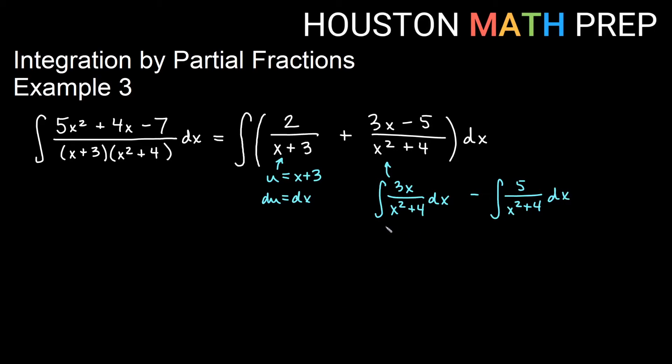If we do that, then this one is going to be a u substitution, because if I let u equal the bottom, the derivative is 2x, and that's a multiple of 3x, so u sub will work here. If I do this one, then this is going to be some multiple of an inverse tangent definition. So we have different methods for each of these.